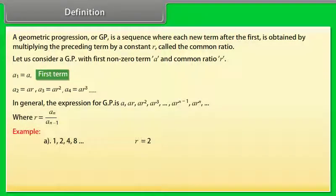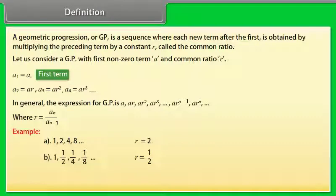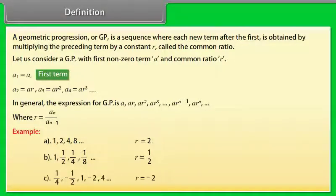Example: 1, 2, 4, 8, and so on — R = 2. Another series: 1, 1/2, 1/4, 1/8, and so on — R = 1/2. Another series: 1/4, −1/2, 1, −2, and so on — R = −2.